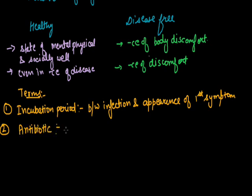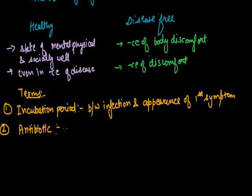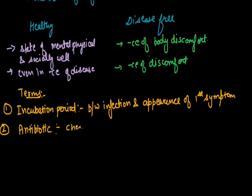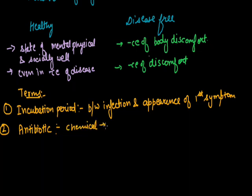The second term is antibiotic. Antibiotics are chemicals that kill or stop the growth of certain microbes that enter our body. When we have a disease, antibiotics help in the destruction of pathogens. Antibiotics primarily destroy bacterial diseases.